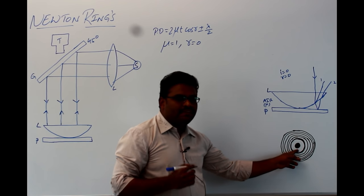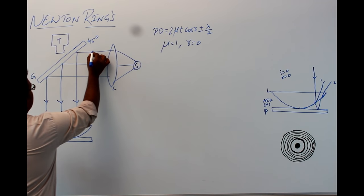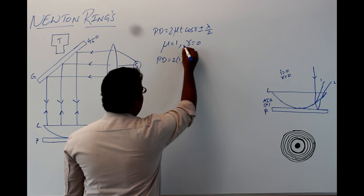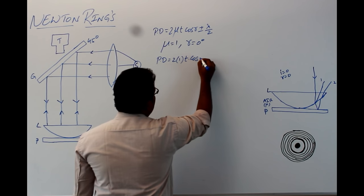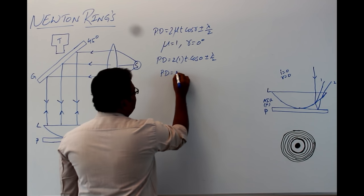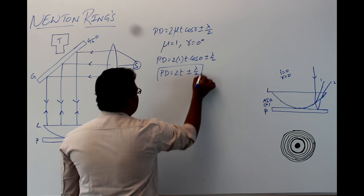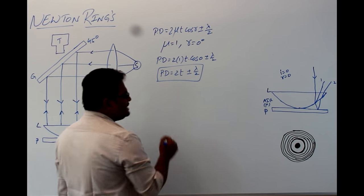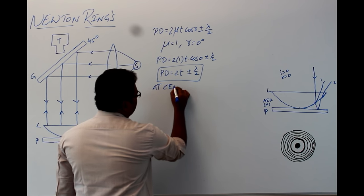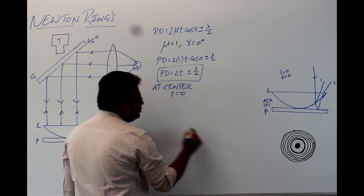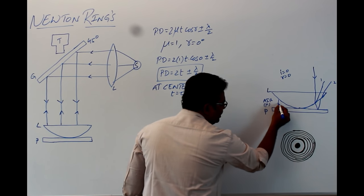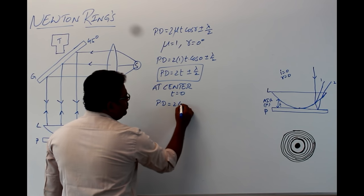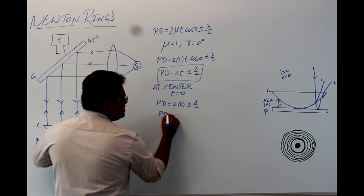Why the centre of Newton's rings is dark in the reflected case: the path difference becomes 2μt·cos(r) ± λ/2, and substituting μ=1 and r=0, the path difference becomes 2t ± λ/2. At the centre, the thickness of the air film is 0, so the path difference becomes 2(0) ± λ/2, which equals λ/2.